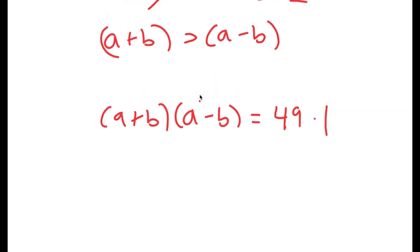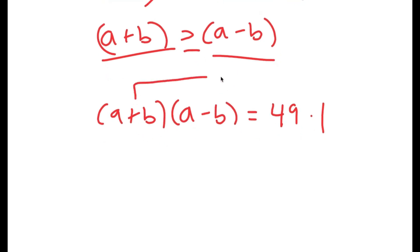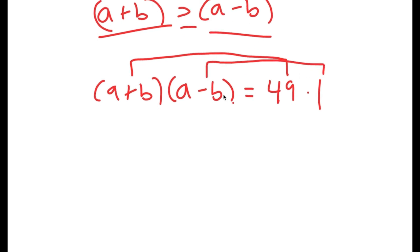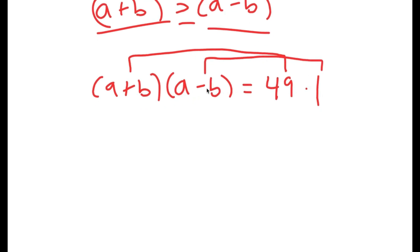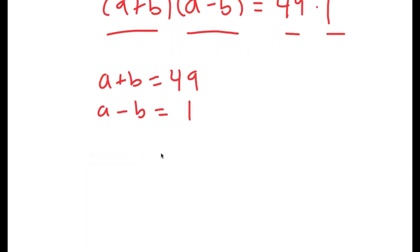Because a plus b is greater than a minus b, we can say that a plus b is equal to 49 and a minus b is equal to 1, since 1 is less than 49 and a minus b is less than a plus b. So what we have here is a system of equations, and I'm going to add these equations together.